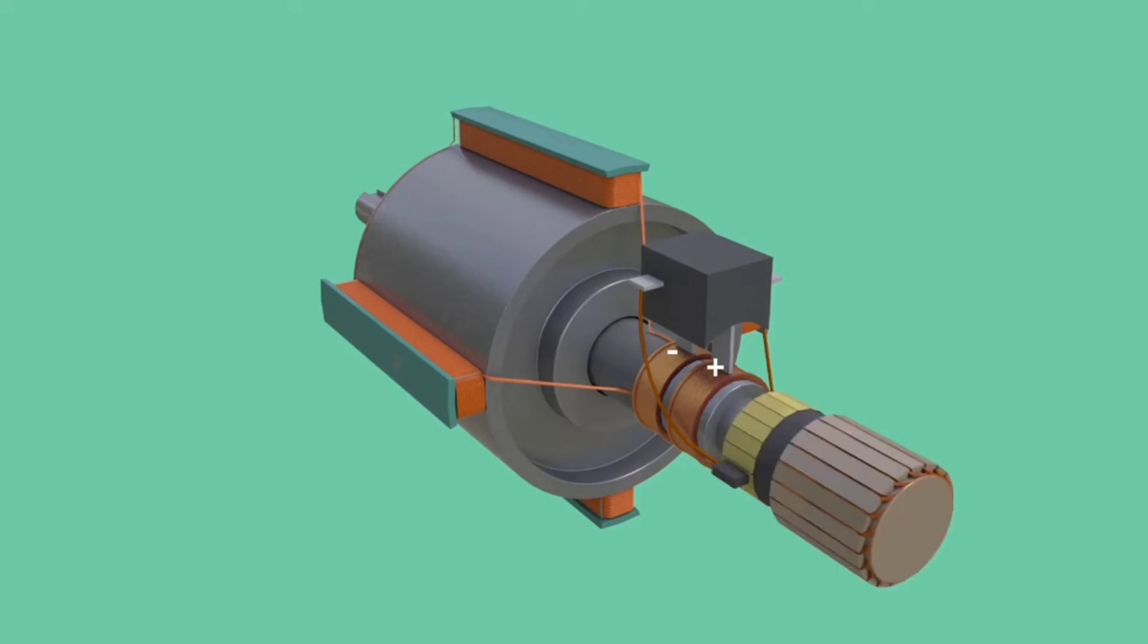This DC current is supplied either from an external source or from a small DC generator which is fitted on the same prime mover. Such alternators are called self-excited.